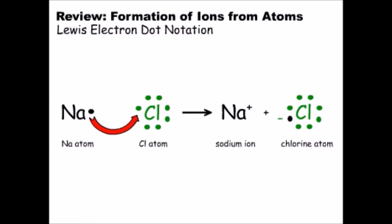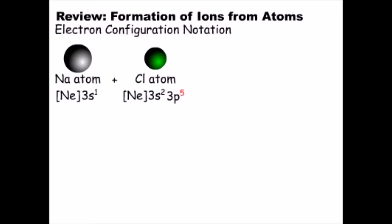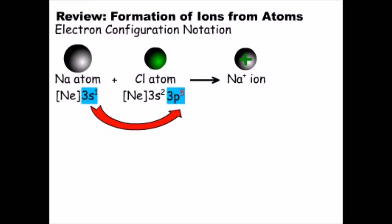The sodium ion has one less electron than the sodium atom, so it has a net positive 1 charge. The chloride ion has one more electron than the chlorine atom, so it has a net negative 1 charge. We can also see this process using electron configurations. Sodium readily donates its single 3s electron to chlorine, giving the sodium ion the same electron configuration as neon. The chloride ion now has eight more electrons than neon.